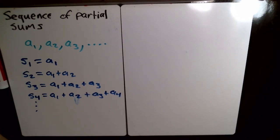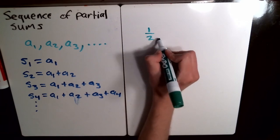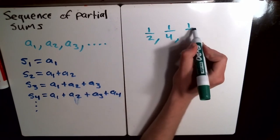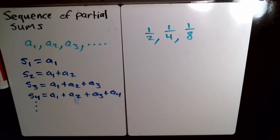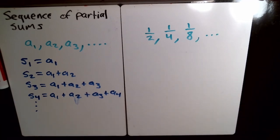So, let's look at an example. Let's say we've got our sequence here. It's our first term is a half. Then it's a fourth. Then it's an eighth. And so on.